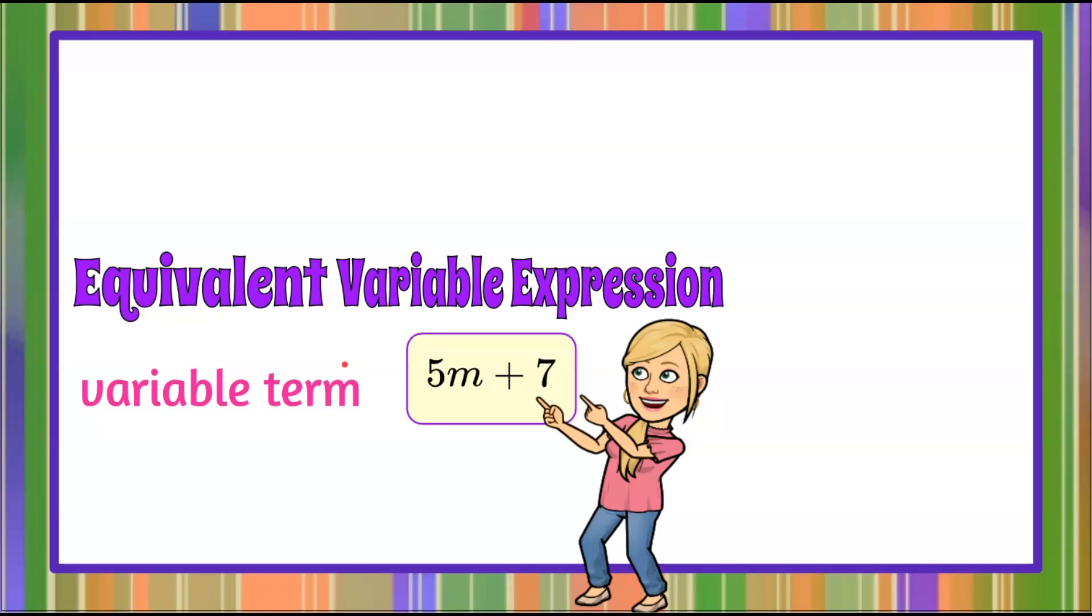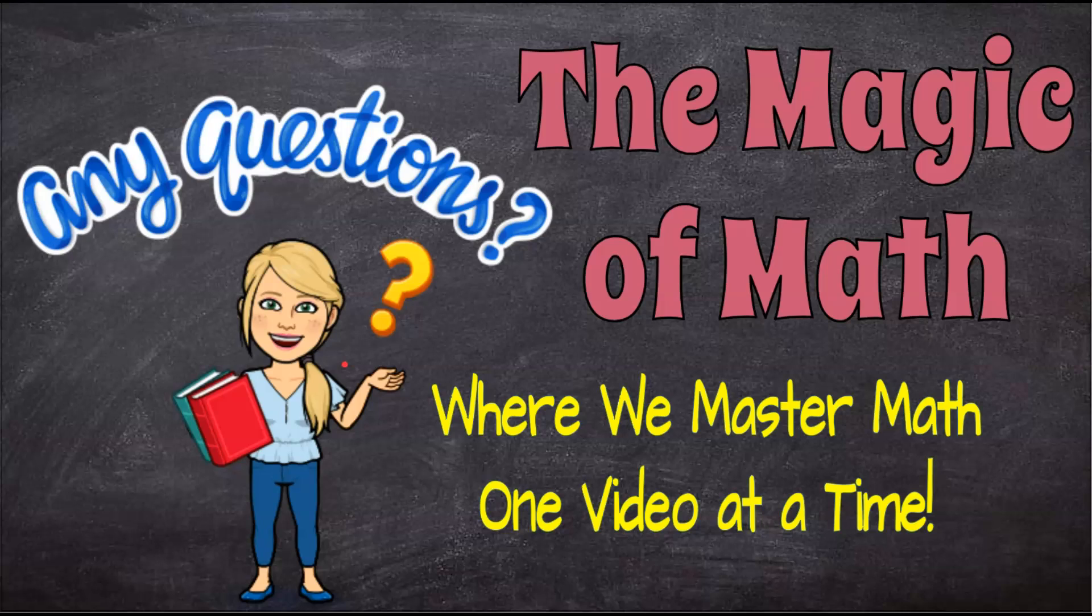And there you have it, that is how you read and combine like terms in an equivalent variable expression using the commutative property. Thanks for joining me today at the magic of math where we continue to master math one video at a time. Thanks for joining me today and I hope you'll come back soon.